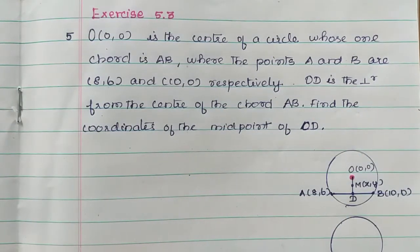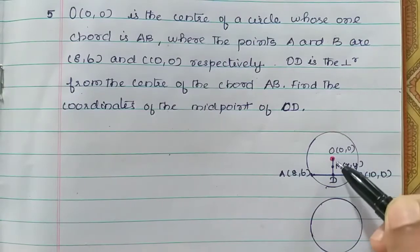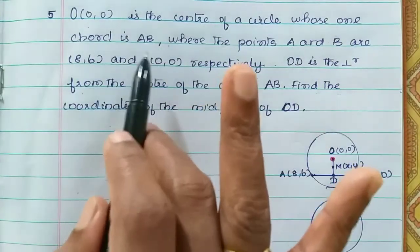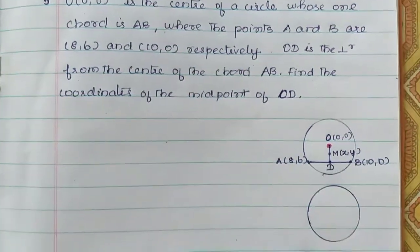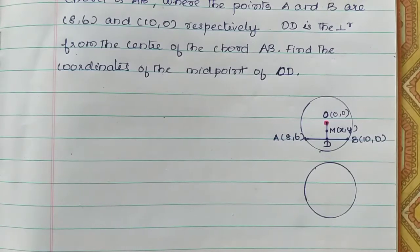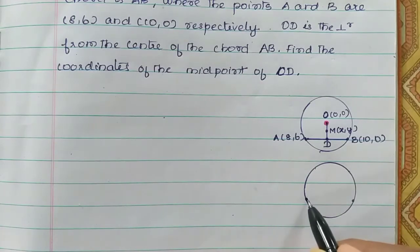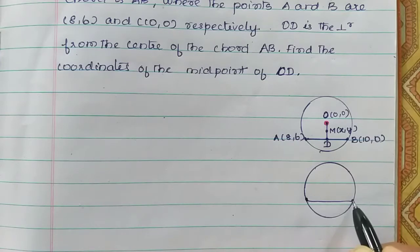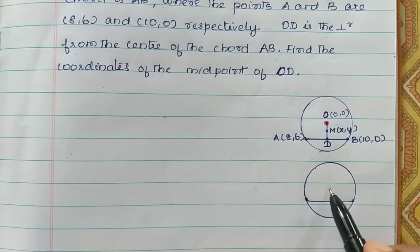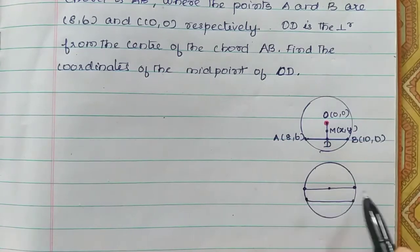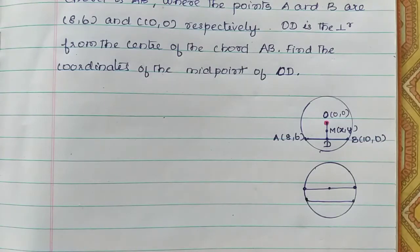In the first sentence, O(0,0) is the center of the circle. If you have a circle, the center of the circle is O, and whose one chord is AB. What is a chord? The chord is a line segment. The longest chord is the diameter. The diameter passes through the center of the circle. That is the longest chord in the circle.